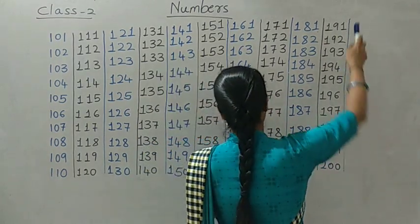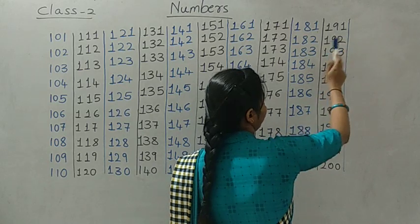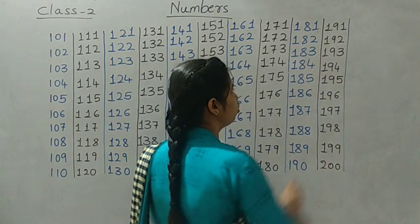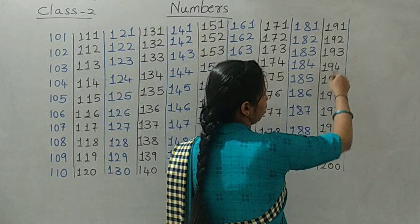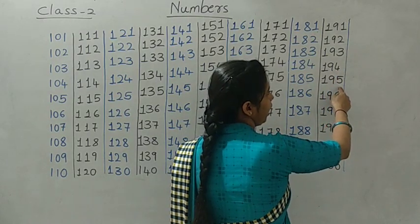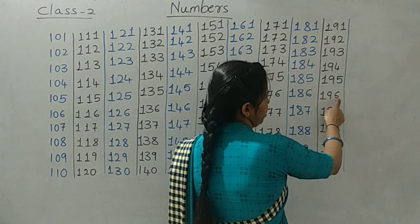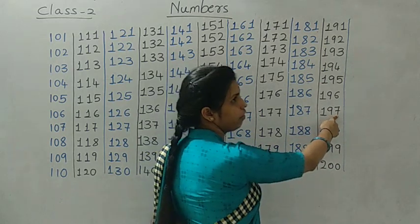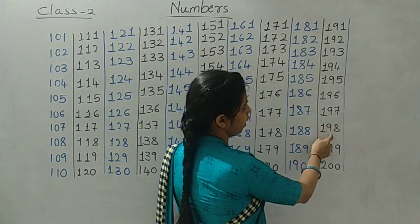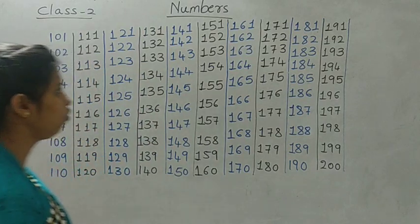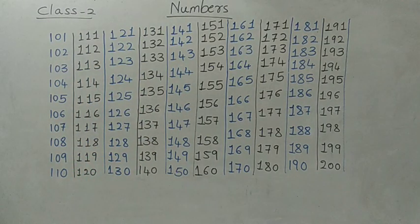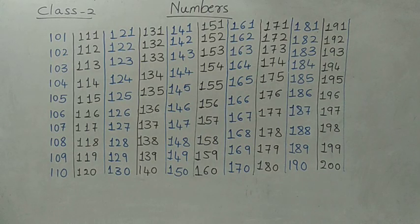See again, I am reading the last line: 191, 192, 193, 194, 195, 196, 197, 198, 199, 200. Final one got 200. Okay dear students, I hope you all have completed 101 to 200. Now again all of you keep your finger and start reading.